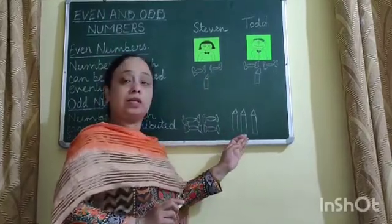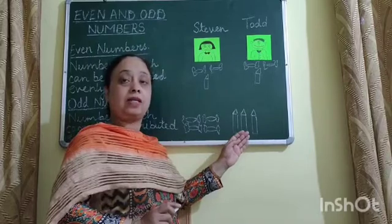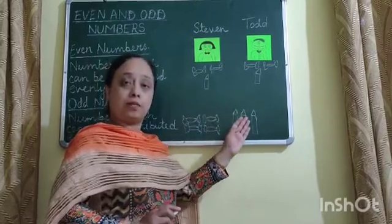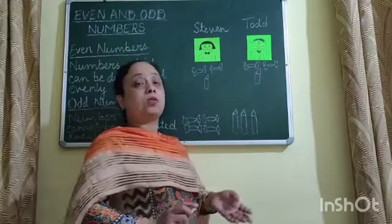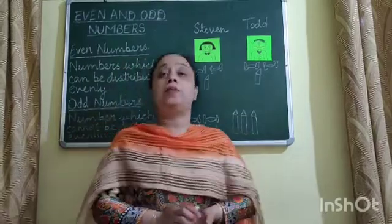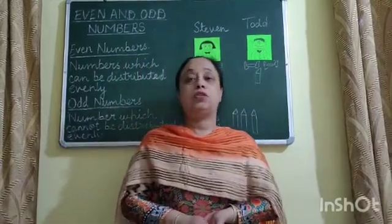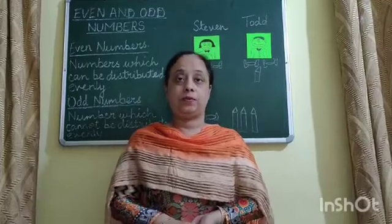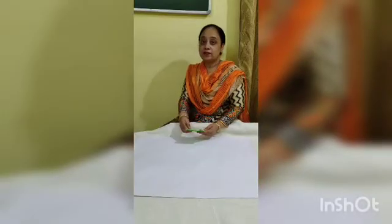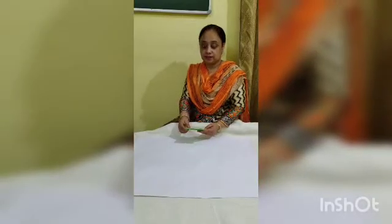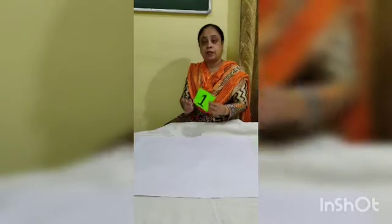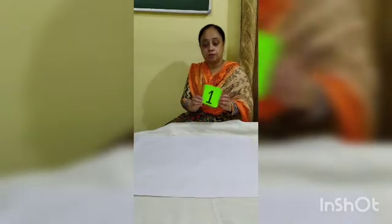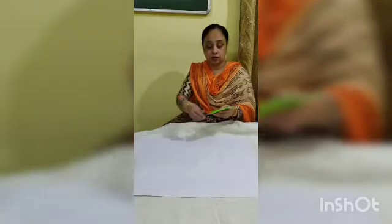The distribution is unequal or uneven, so three is an odd number. I would also like to explain odd and even numbers through an activity. I have prepared some placards for numbers 1 to 10, which I am going to place on this chart.